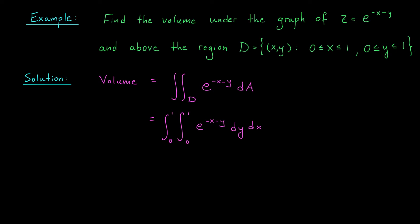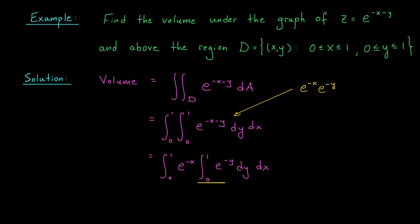I see a little shortcut we can use. Notice that the integrand e to the minus x minus y can be split into a product: e to the minus x times e to the minus y. Since our inner integral is with respect to y, we treat e to the minus x like a constant and pull it out of the integral. That gives us the integral from 0 to 1 of e to the minus x times the integral from 0 to 1 of e to the minus y dy dx. The inner integral with respect to y just represents a real number — a scalar — so we can pull it out of the outer integral too.